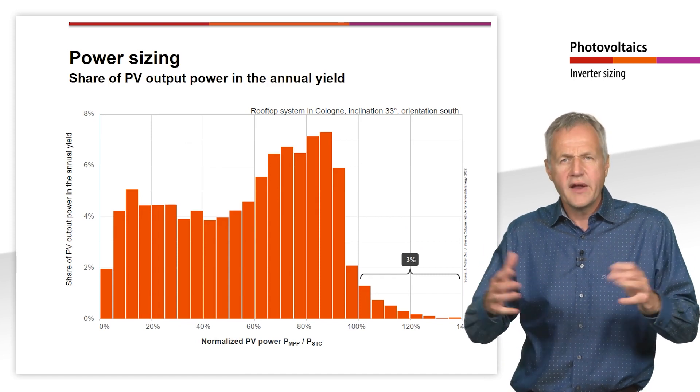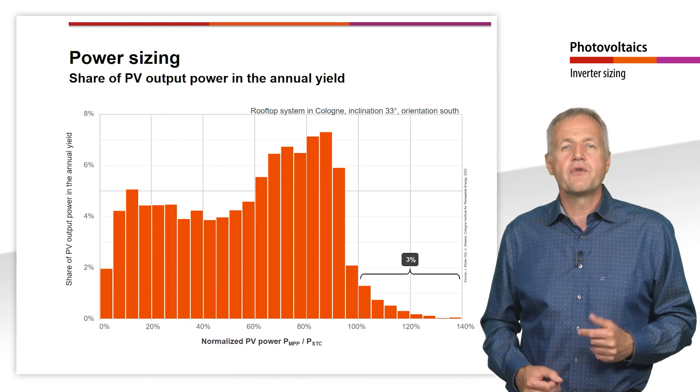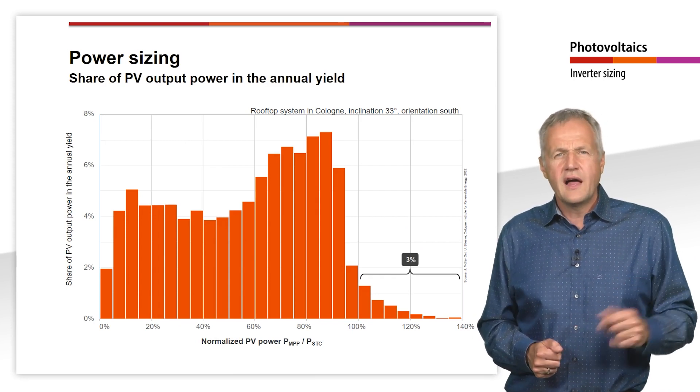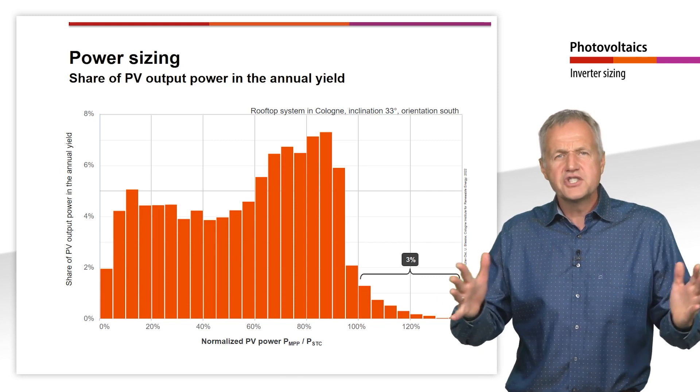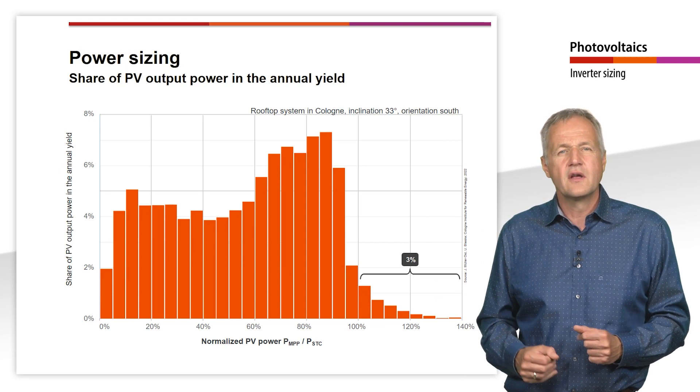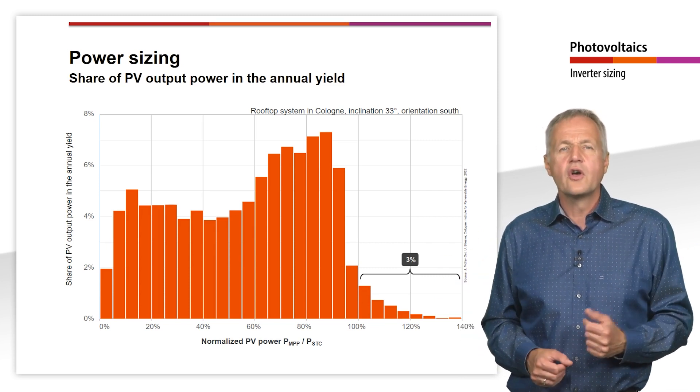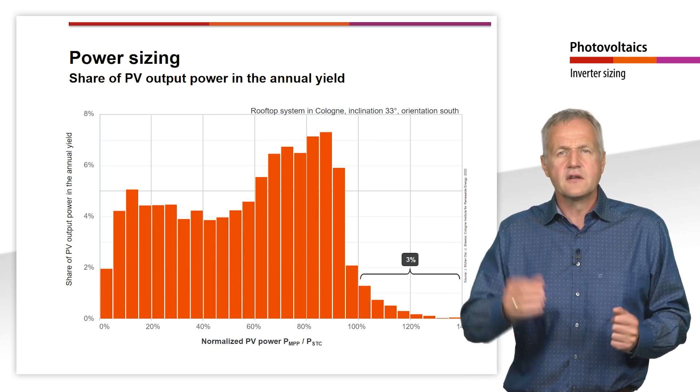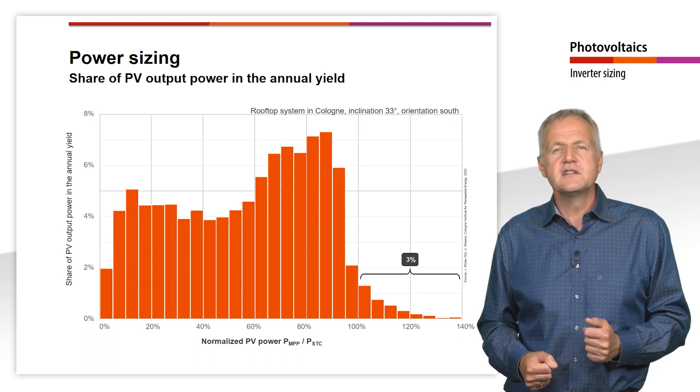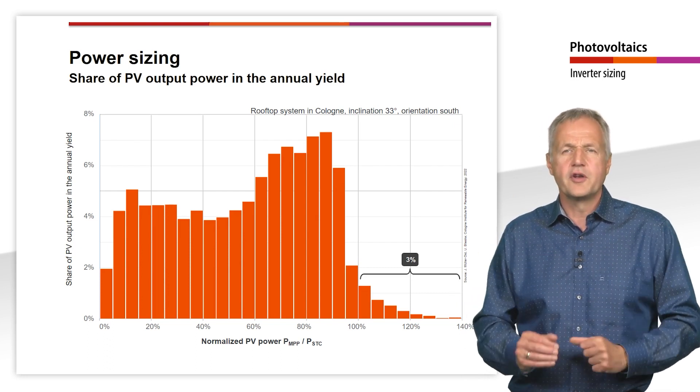Due to the correlation just explained, the nominal power is very rarely reached during normal operation of a PV module. The largest share of the annual energy yield is therefore generated at lower PV outputs. Let us again consider the example of a rooftop system in Cologne with an optimal tilt angle. Here about 97% of the annual energy yield is generated at system outputs below the nominal output.